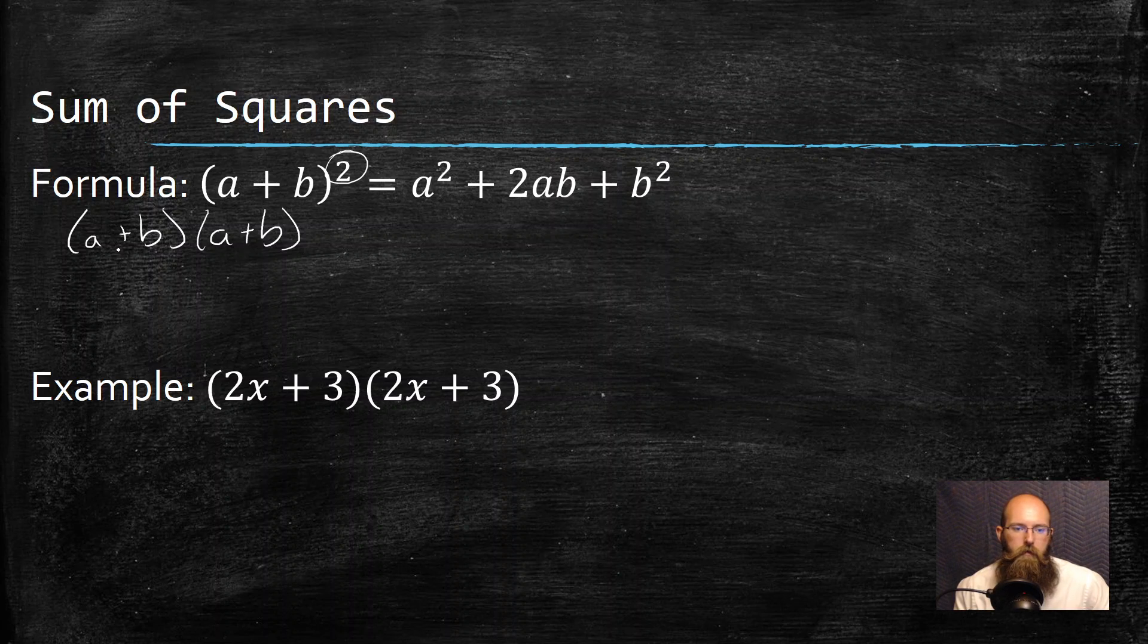Then I could use the distributive property on this. I could distribute and a times a gets me a², a times b gets me +ab, b times a, if I write them alphabetically, ab, and then b times b gets me b². And I can combine my two middle terms that are like terms, I get 2ab + b².